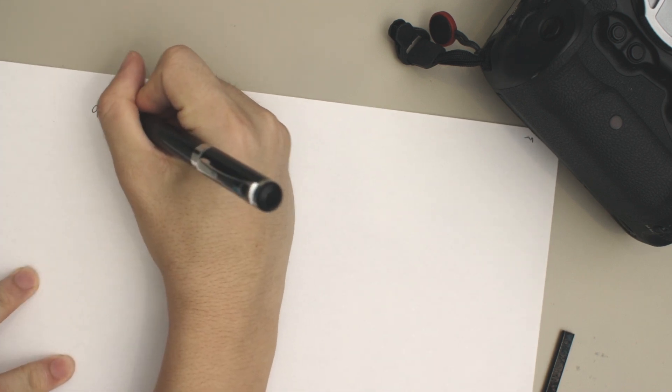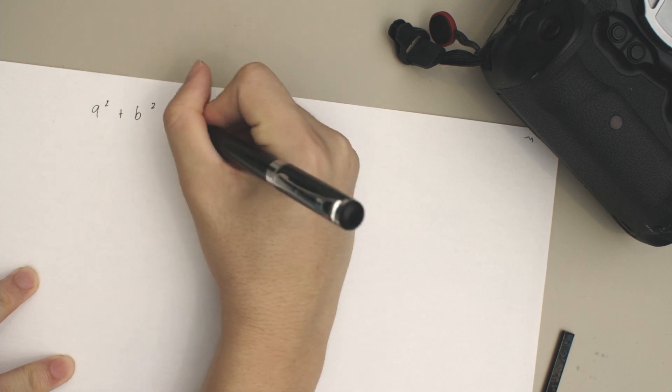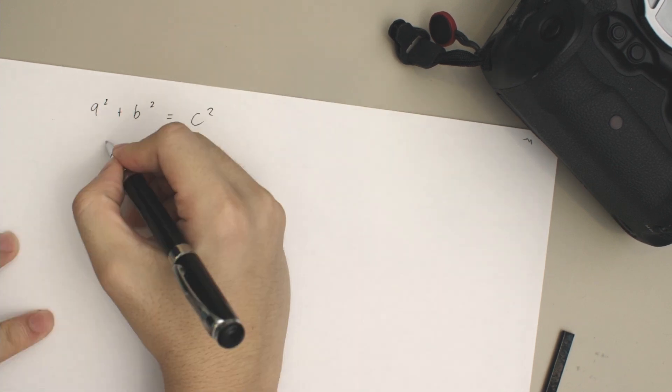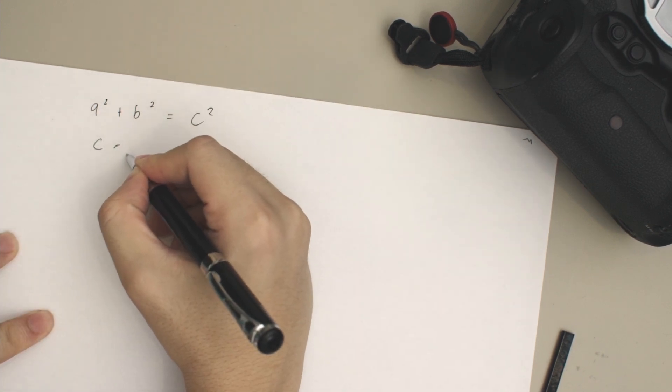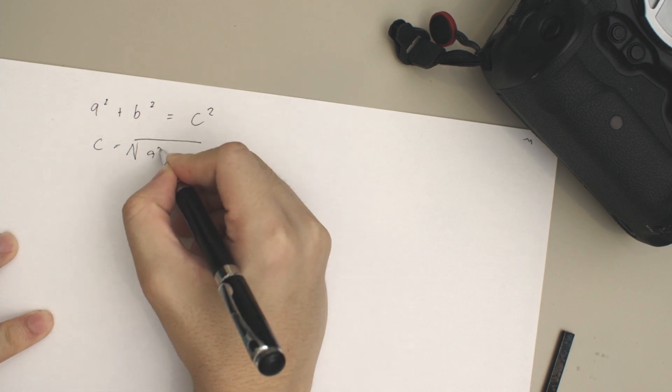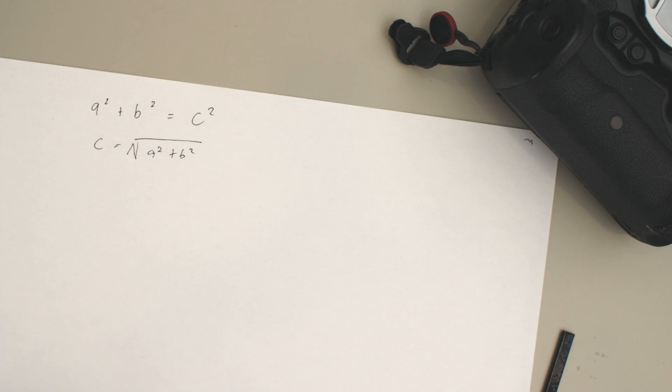I'm going to show you how you actually calculate the crop factor. We're going to be using this formula, and it might look familiar: a² + b² = c². However, if I put it this way—square root of a² + b²—suddenly it's like, hey wait a minute, I've seen this before. This is the Pythagorean theorem.